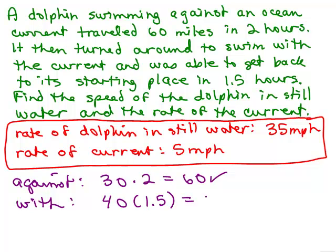1.5 hours or 3 halves. So we do 40 times 1.5 and we get 60 as well. And remember, you could have written that as 40 times 3 halves and you would also get 60. So it depends how you want to do your arithmetic.